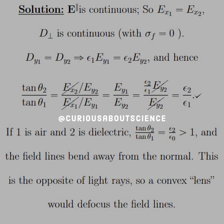So for the comment case, if 1 is air and 2 is a dielectric, then the ratio of tangents is equal to epsilon 2 over epsilon 0, since it's air, and that ratio would be greater than 1. And the field lines bend away from the normal. This is the opposite of light rays, so a convex lens would defocus the field lines.